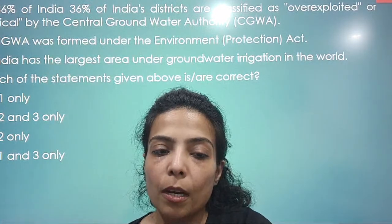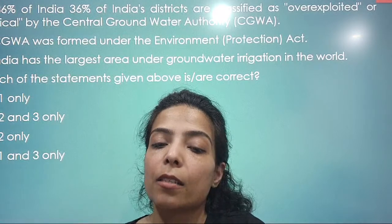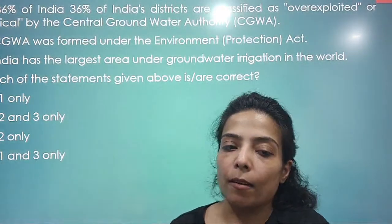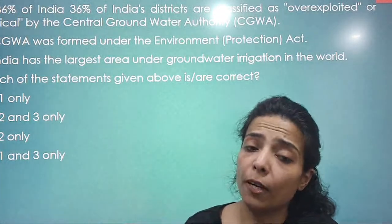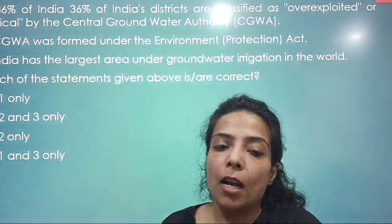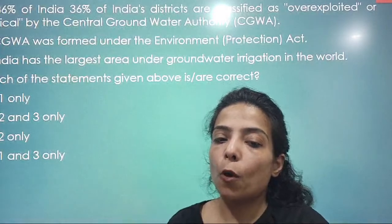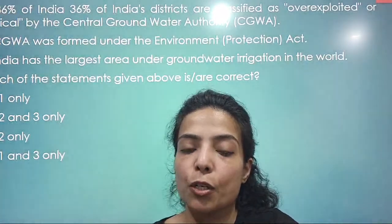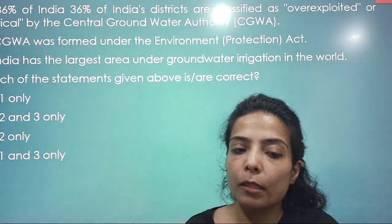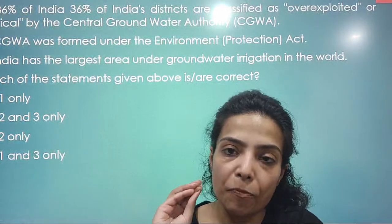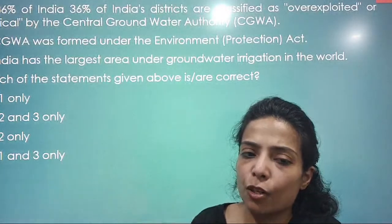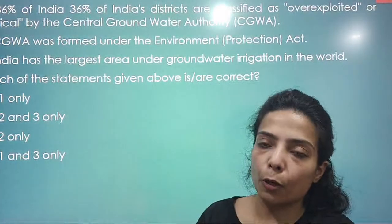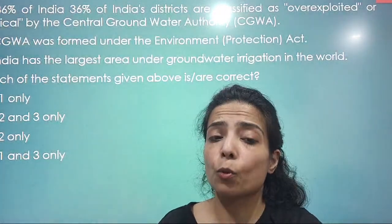36% of India's districts are classified as overexploited or critical by the Central Ground Water Authority — is the first statement to check. The Central Ground Water Authority was formed under the Environmental Protection Act — this is a correct statement. India has the largest area under groundwater irrigation in the world — this is true. Statements 2 and 3 are true; statement 1 has a problem as the percentage of overexploited districts is overstated. Water conservation has always been in the news with many programs, which is why this question was asked.